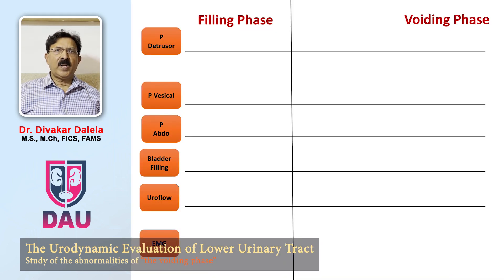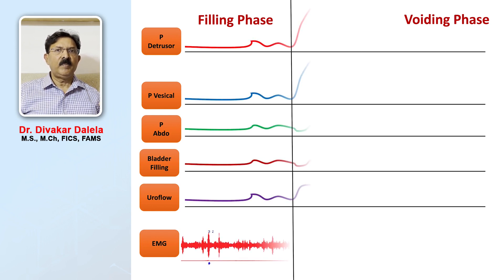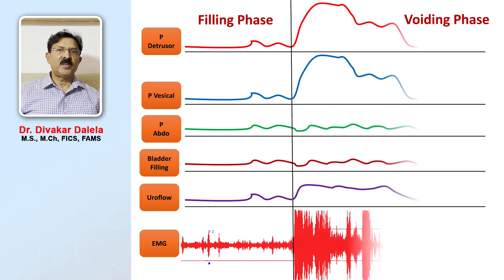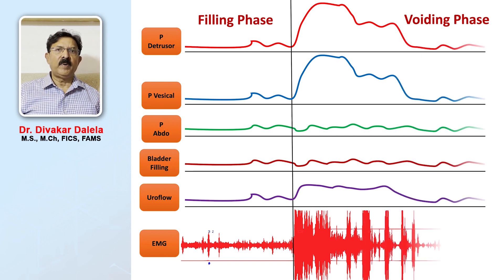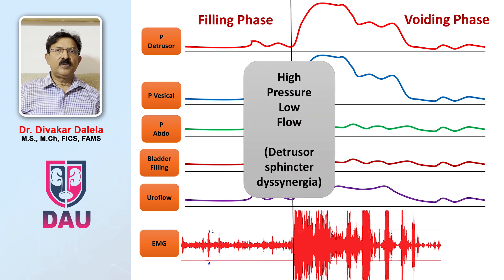Now look at this study again — you will also see an EMG line at the bottom. In the filling phase, you notice some sphincteric contractility to maintain the bladder. As you give the voiding command, the pressure flow lines show elevation and the uroflow line shows low Q-max, but the sphincteric activity shows high spurts. So here is a case where the sphincter, instead of relaxing, is contracting during the phase of voiding — that is the reason for low Q-max. This condition is high pressure, low flow, due to detrusor-sphincter dyssynergia.